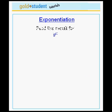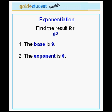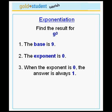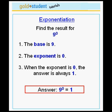Let's do some examples. Let's find the result for 9 to the power 0. This is one of our special rules. We have the base is 9, but the exponent is 0. Because of the special rule for when the exponent is 0, the answer is always 1. Therefore, 9 to the power 0 is equal to 1.